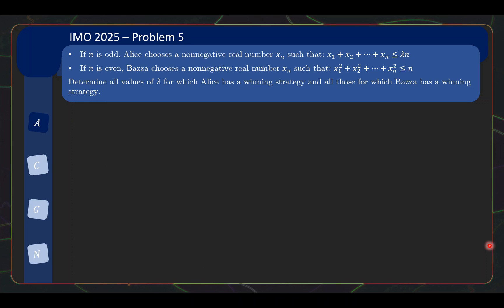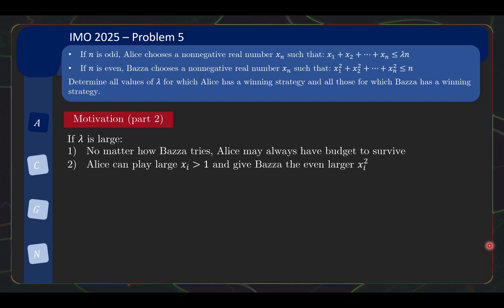Now let's think about the other scenario. If lambda is large, it looks like things will be favorable for Alice in two ways. Firstly, because the total budget Alice has is going to grow at a very fast rate, maybe it is the case that no matter how Bazaar tries, Alice may always have budget to survive. Well, and the other good thing is if the budget gets very big, maybe Alice can even put in a gigantic xn on her turn and throw the even larger xn square back to Bazaar. So then Bazaar will be destroyed because Bazaar's budget is growing at only a rate of n.